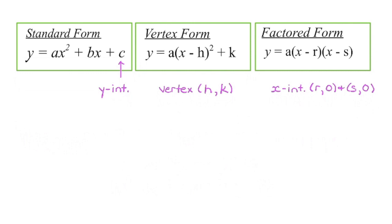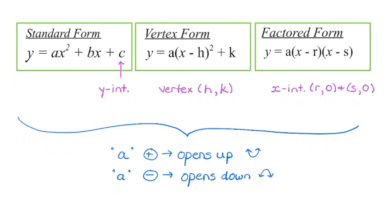Factored form gives us our x-intercepts — this is our first x-intercept, and this is our second x-intercept, if that parabola happens to have two x-intercepts. Each of those forms has an a value. A tells us the direction of opening, so if we have a positive a value, our parabola is opening up and we're going to have a minimum.